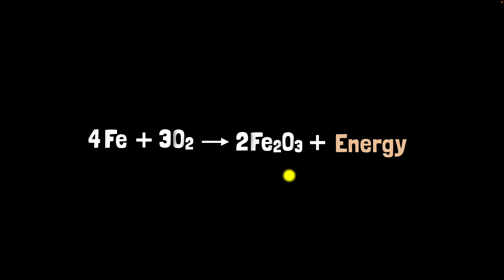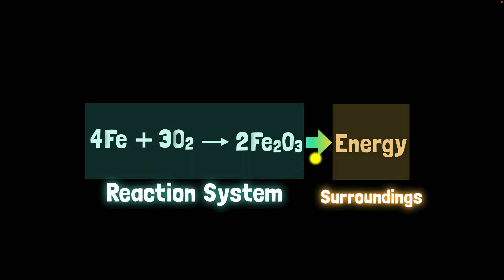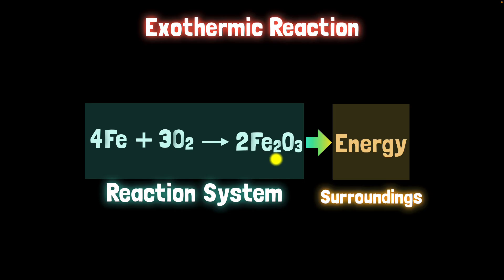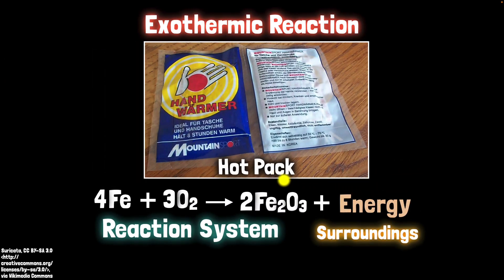But where is the energy being released — where is it going? We can think of it as the energy going out of our reaction system into the surrounding. That's another way to think about an exothermic reaction: the energy is going into the surrounding. And that energy can be used to heat the surrounding. That's exactly how your hot packs work.